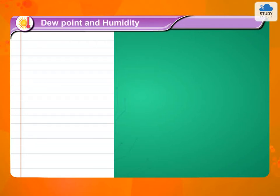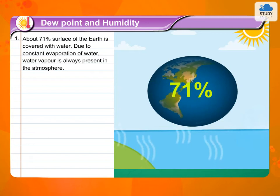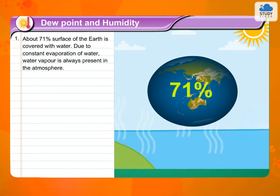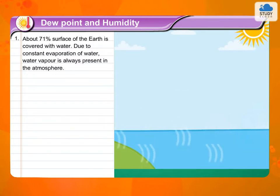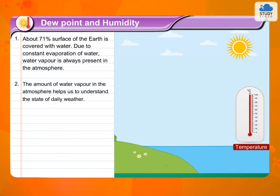Dew Point and Humidity. About 71% of the surface of the earth is covered with water. Due to constant evaporation of water, water vapor is always present in the atmosphere. The amount of water vapor in the atmosphere helps us to understand the state of daily weather.